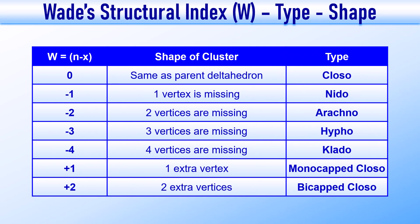Let us quickly summarize Wade's Rules for inorganic cage compounds. The Wade's index N-X tells us how the actual cluster differs from the parent deltahedron. When N-X equals 0, the cluster has the same shape as the deltahedron, i.e., it is called a closo cluster. If N-X is minus 1, one vertex is missing — a nido cluster. If minus 2, two vertices are missing, giving an arachno cluster. Minus 3 is a hypho cluster. If N-X is positive, plus 1 gives a monocapped closo and plus 2 gives a bicapped closo. By just looking at N-X, we can quickly identify the type and shape of any inorganic cage compound.